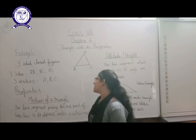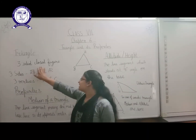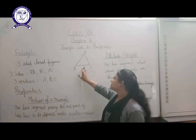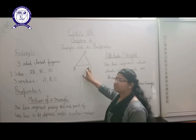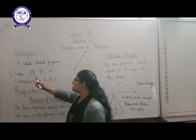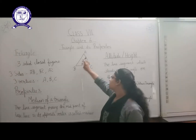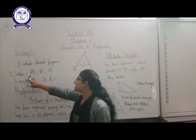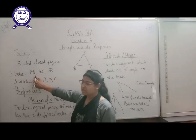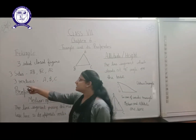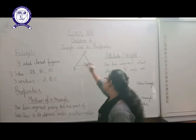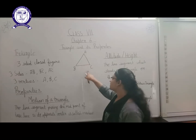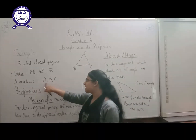First of all, what is a Triangle? We all know that a Triangle is a 3-sided closed figure. Here I have made ABC to be a triangle. You can see that this is a closed figure and it has 3 sides: AB, BC, and AC. The 3 vertices are Vertex A, Vertex B, and Vertex C.